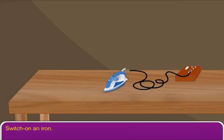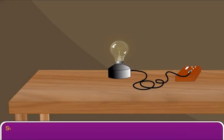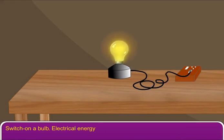Switch on an iron. Electrical energy is converted into heat energy. Switch on a bulb. Electrical energy is converted into light energy.